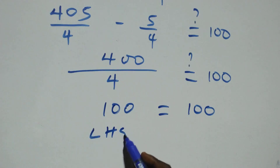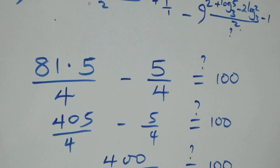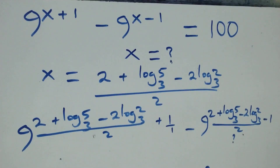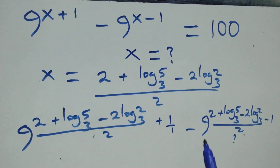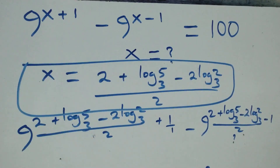The left-hand side equals the right-hand side, and therefore we conclude that x equals to 2 plus log 5 base 3 minus 2 log 2 base 3, all over 2, satisfies this given problem. Thank you for watching — don't forget to subscribe for more videos, turn on the notification bell, share this video, give a thumbs up, and put your comment. See you next class, bye for now.